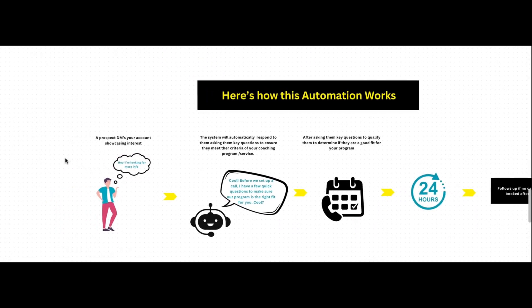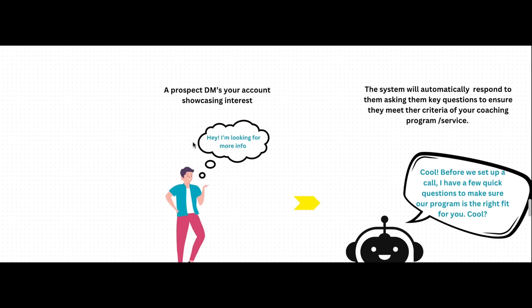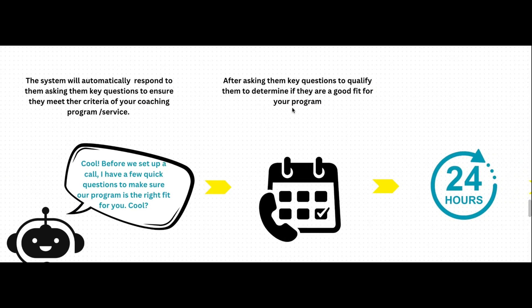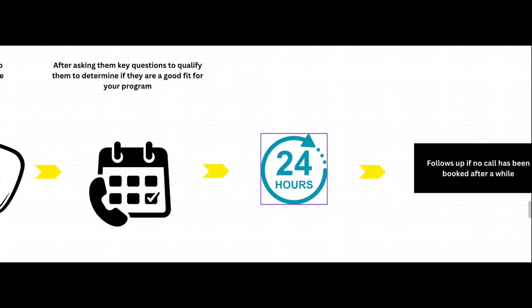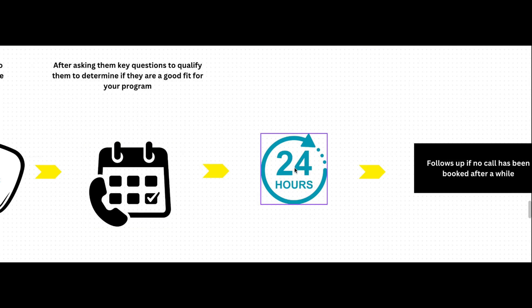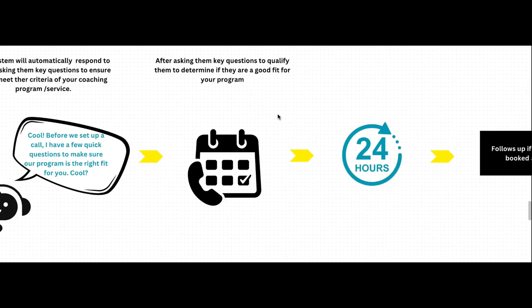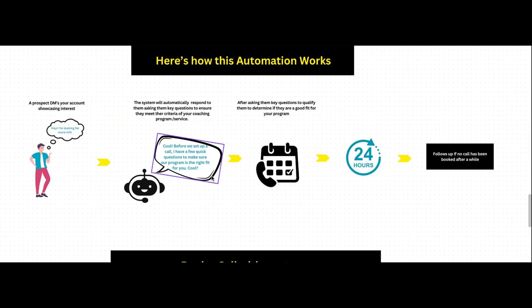Here's how this automation actually works. It all starts when a potential prospect DMs your Instagram inquiring about your service or your program. The bot then automatically replies within about three seconds, asking the prospect a few key questions to ensure they are a good fit for your program or service. After qualifying them, it sends them a Calendly link to book an appointment with you. And if no call has been booked immediately, it follows up within 24 to 48 hours to ensure the lead is still interested and books a call with you. The bot takes care of capturing and even nurturing a lead until they book a call with you.